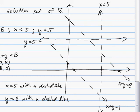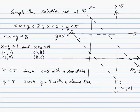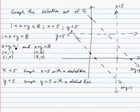On the first line, x plus y is greater than 1. That's this line here. Our test point (0,0) is not a solution because we get 0 greater than 1, which is not true. Which means for this line, we're going to be shading this direction.